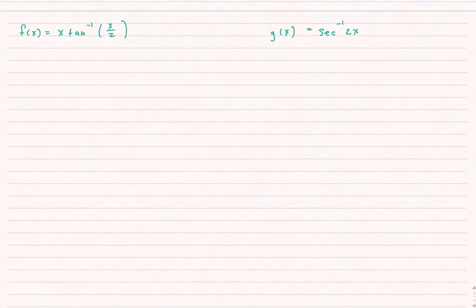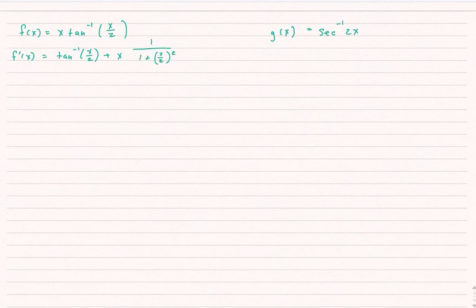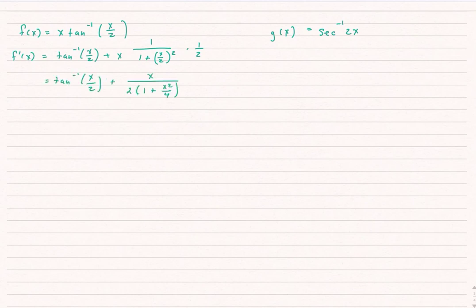Let's take two examples. To find f prime of x I need the product rule. The derivative of x with respect to x is 1, so I get tan inverse of x over 2 plus x times the derivative of tan inverse of x over 2. The derivative of inverse tangent is 1 over 1 plus whatever is inside squared. I can't forget the chain rule since the argument is x over 2, whose derivative is 1 half. After simplifying and multiplying numerator and denominator by 4 to clear complex fractions, I arrive at the final answer.